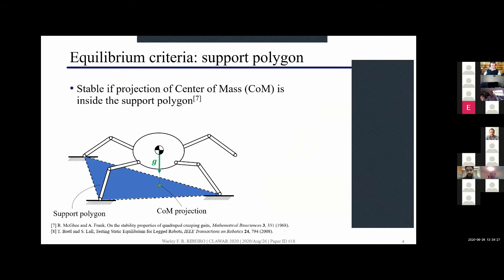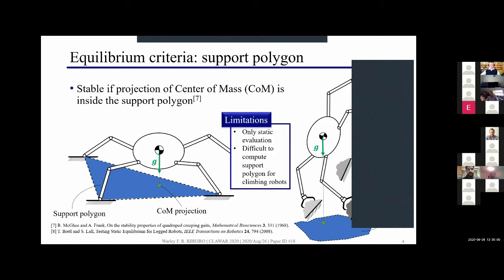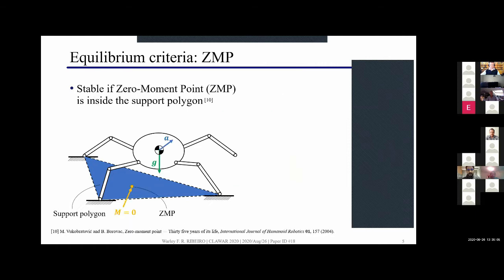One important aspect of the locomotion of climbing robots is evaluating the equilibrium to prevent falls. As all of you might know, the very first equilibrium criterion for legged robots was based on the support polygon which is the polygon made by the contact points between the robot and the surface. But if you think about the climbing robot problem, we can compute the support polygon but it has a very complex shape because we need to compute it based on the static equilibrium equations and friction conditions, which gives us some limitations by only being static and these complex calculations.